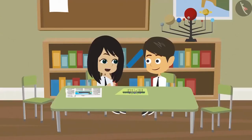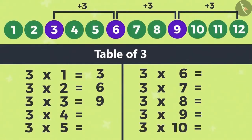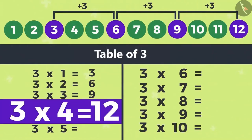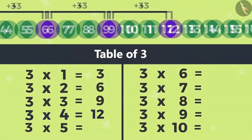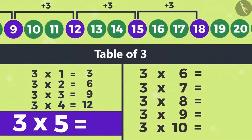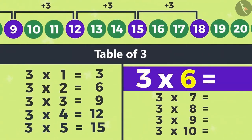Yes, it seems so. I will try. Right now we are at 9. Three numbers from 9 is 12. That means we write 12 in front of 3×4. This makes 3×4 is 12. So the next number will be 15 and the next 18. This means 3×5 is 15 and 3×6 is 18. We got to know that there will be 18 tyres in 6 rickshaws.